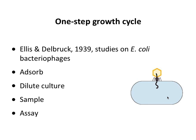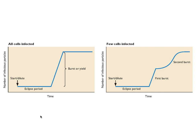He would take a culture of E. coli — shown here as the blue cell — and a culture of phage, and he would allow the phage to attach to E. coli. Then he would dilute the culture so no more adsorption occurred. Now you incubate the culture and take samples at different times after adsorption, measuring virus infectivity by plaque assay.